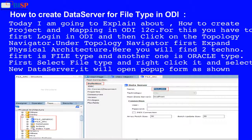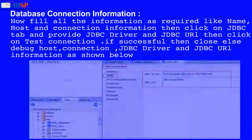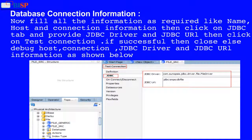It will open a popup form as shown below. Now fill all the information as required, like name, host, and connection information. Then click on the JDBC tab and provide the JDBC driver and JDBC URL, then click on Test Connection. If successful, close the window. Otherwise, debug the host, connection, JDBC driver, and JDBC URL information and test again until the connection is successful.